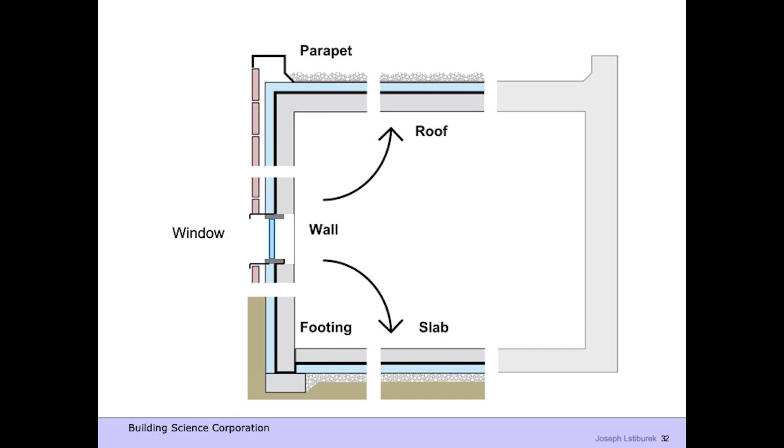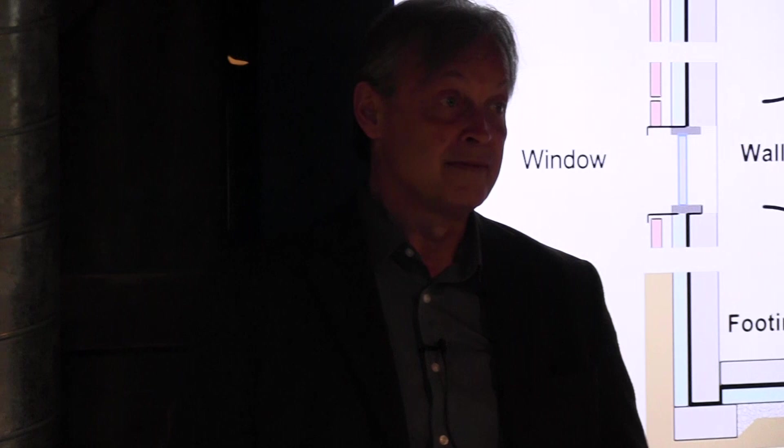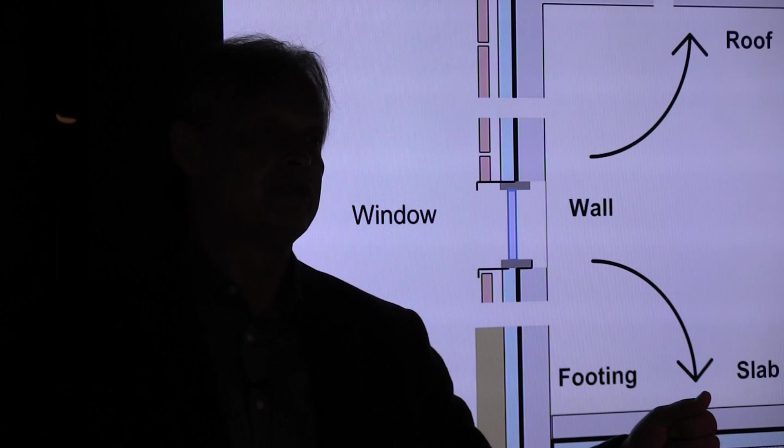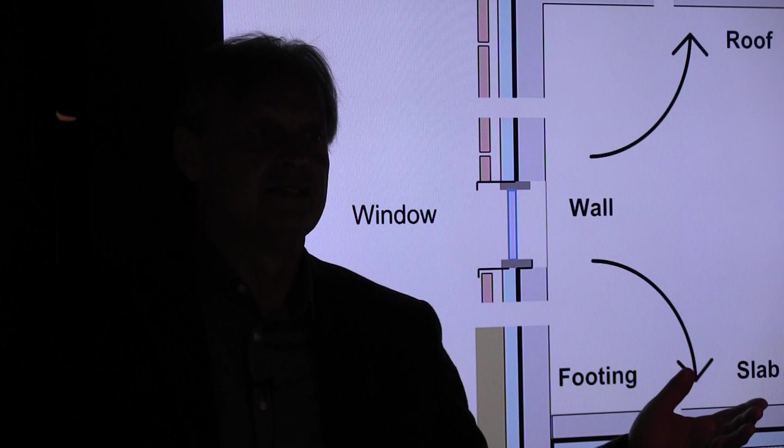Now, failures rarely happen in the field of a roof or a field of a wall. They happen where roofs meet walls. They happen at holes and the holes are windows and doors. And so windows are better than they've ever been. Walls are better. But we have more problems because of the connection between the window and the wall. So it's easy. You connect the water control of the wall to the water control of the window. The air control of the wall to the air control of the window. Vapor, vapor, thermal, thermal. Put them in plumb, level, and square so they can operate. And make sure the wind doesn't suck them out or blow them in. And we're done.